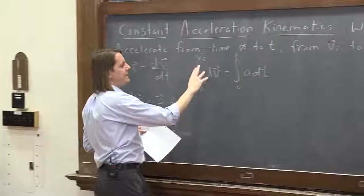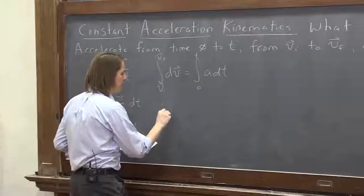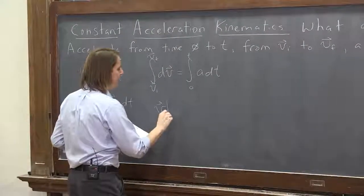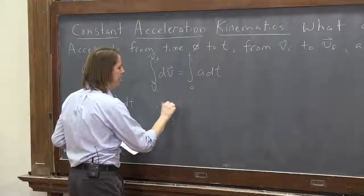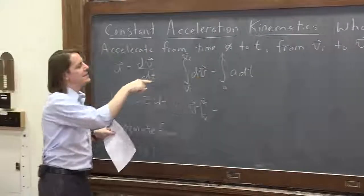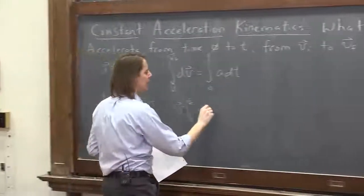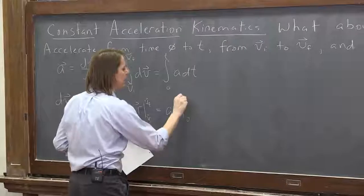So if we integrate dv, if you know how to do calculus, the integral of dv is just v. So v evaluated from vi to vf. Vectors everywhere. That's equal to adt, the integral of a constant times dt is just the constant times t. So that's at integrated from 0 to t.